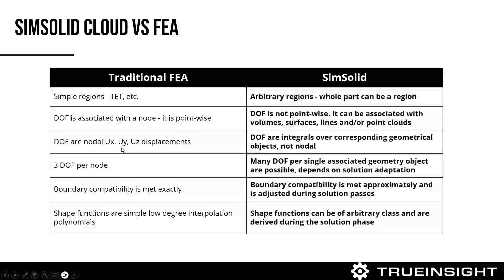The key thing when you look at SimSolid is you're looking at regions — specifically volume-based regions. The degrees of freedom are not point-wise; they're associated with a volume. As a result, you're still going through the equation of motion — it's just going through a different numerical calculation. The shape functions that are generated allow you to solve the system much more efficiently than in traditional FEA.